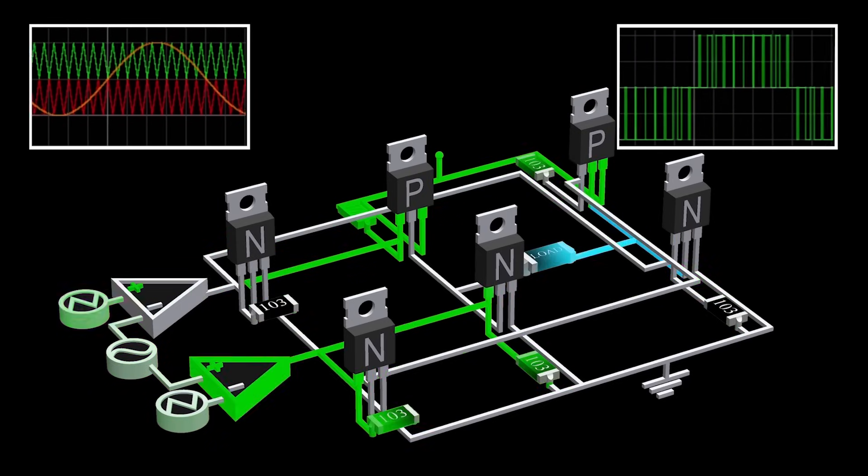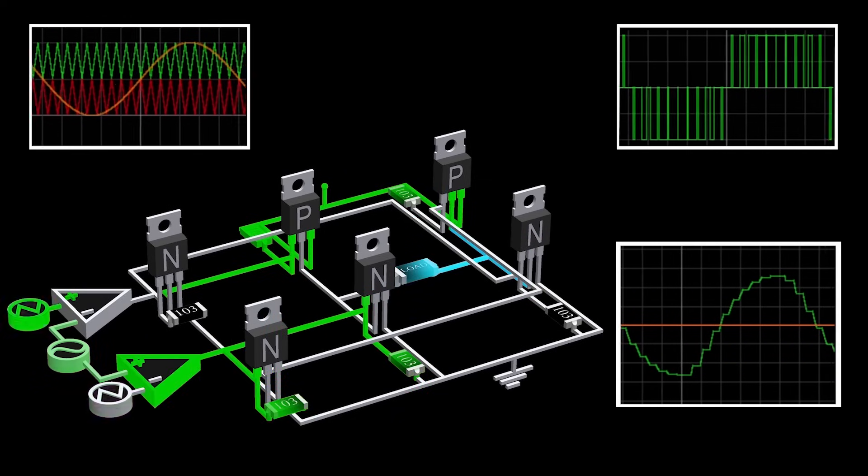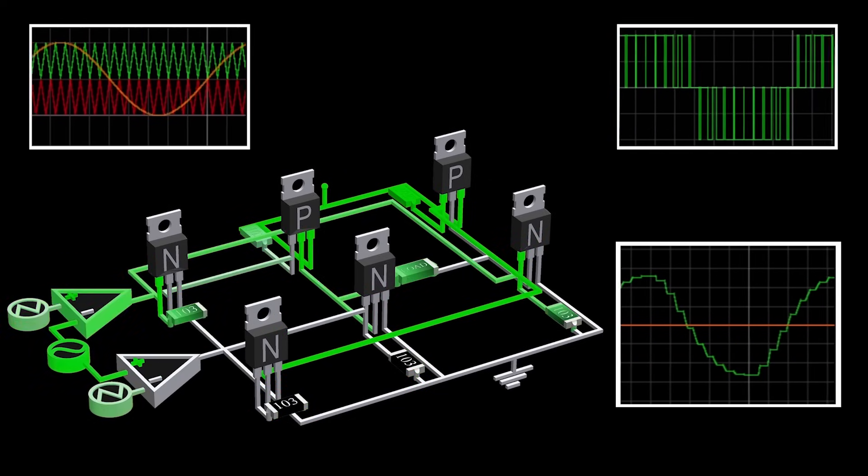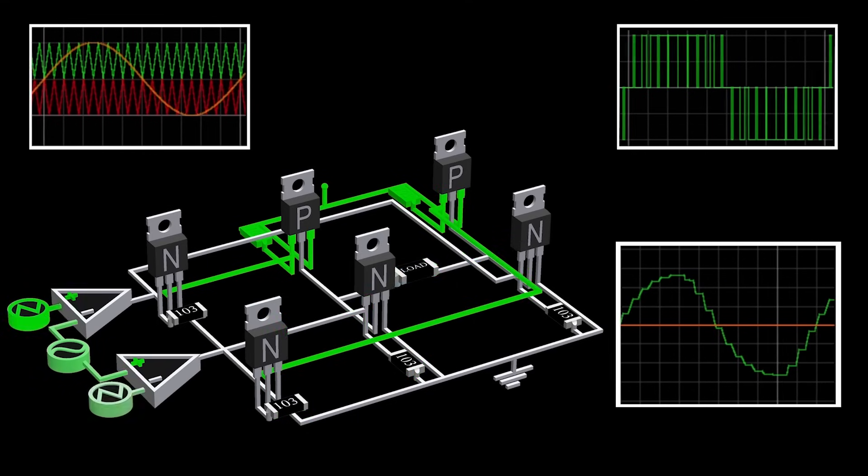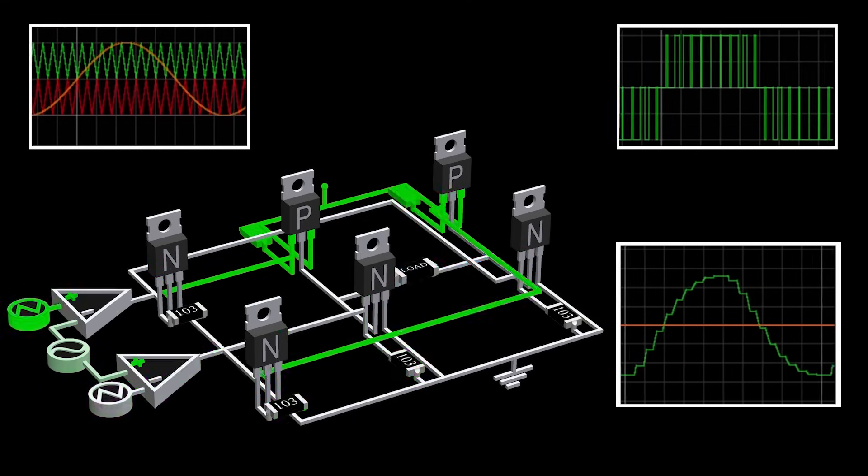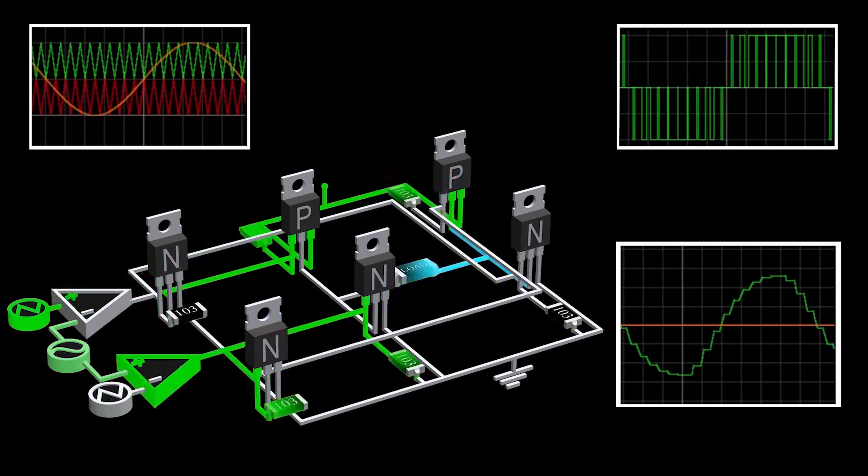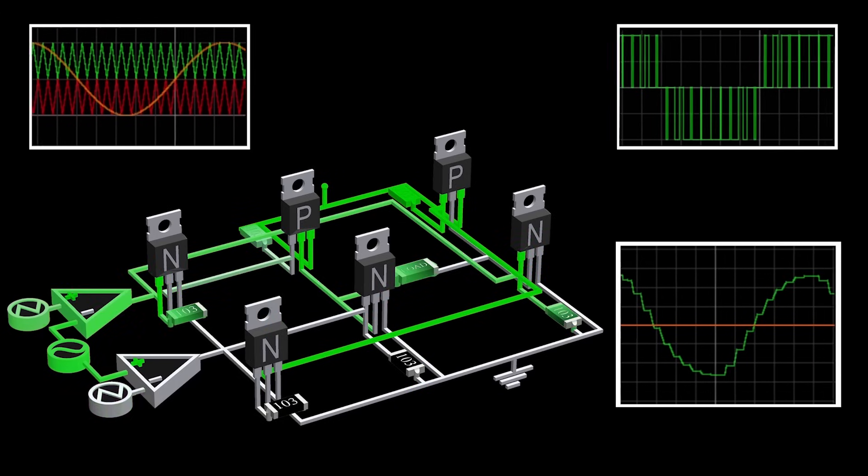If we take the average voltage of each cycle and do it for the complete output, we get the shape similar to the sine wave. To take the average of the cycle, we add inductor and capacitor at the output, creating a low-pass filter, and filtering out the high-frequency triangle wave to get the low-frequency sine wave.